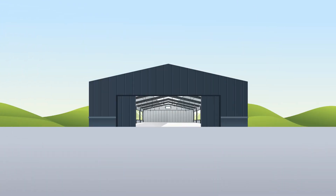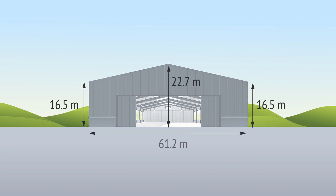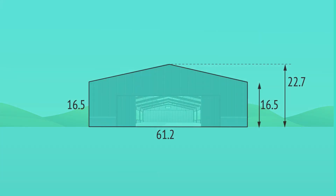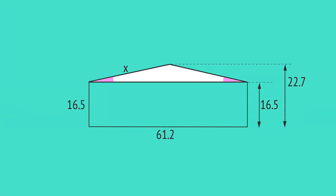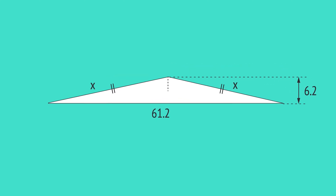This aircraft hangar has a roof with a peak in the middle, both sides having the same slope. We know the height at three points and the total width of the front section. How can we work out the length x of the sloping roof? First, we draw a diagram with the supplied information. Since the roof has the same slope on each side, the roof space makes an isosceles triangle. The height of this triangle is 22.7 minus 16.5, or 6.2 metres. And we can split this isosceles triangle in half to give two right-angled triangles.